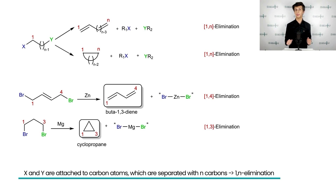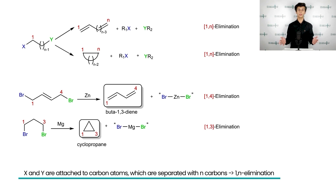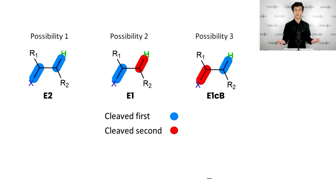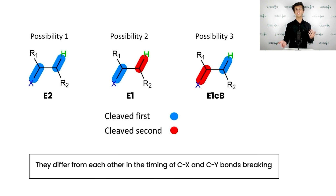As alpha and beta eliminations are much more popular than other types of eliminations, this video will be dedicated to their description and thorough discussion. Now, let us focus on beta eliminations as they represent the nucleus of today's lecture. What makes up the difference between the beta elimination mechanisms? We can differentiate between three mechanisms of beta eliminations. They differ from each other in the timing of Cx and Cy bond breaking.